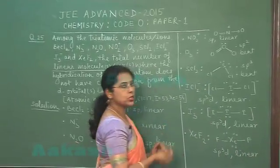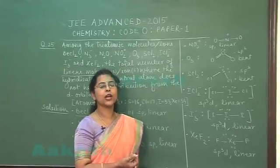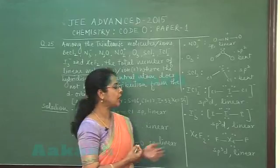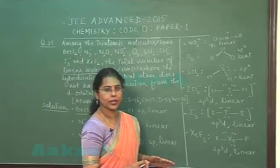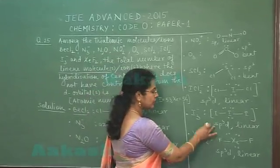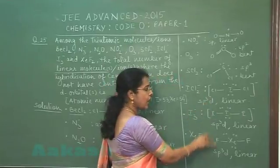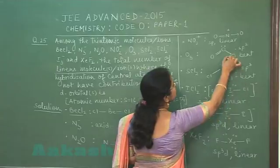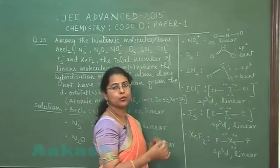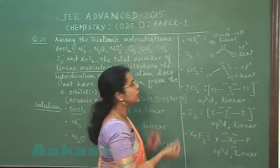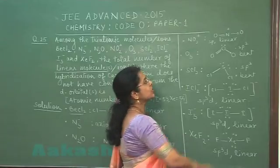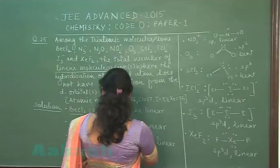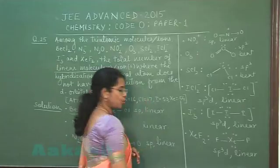Now, according to the question, we have to find only those linear species whose central atom hybridization does not include contribution from the d orbital. ICl2 negative, I3 negative, and XeF2 are excluded because they involve d-orbital contribution, and O3 and SCl2 are excluded because they are bent. The linear species without d-orbital contribution are BeCl2, N3 negative, N2O, and NO2 positive — giving an answer of 4.